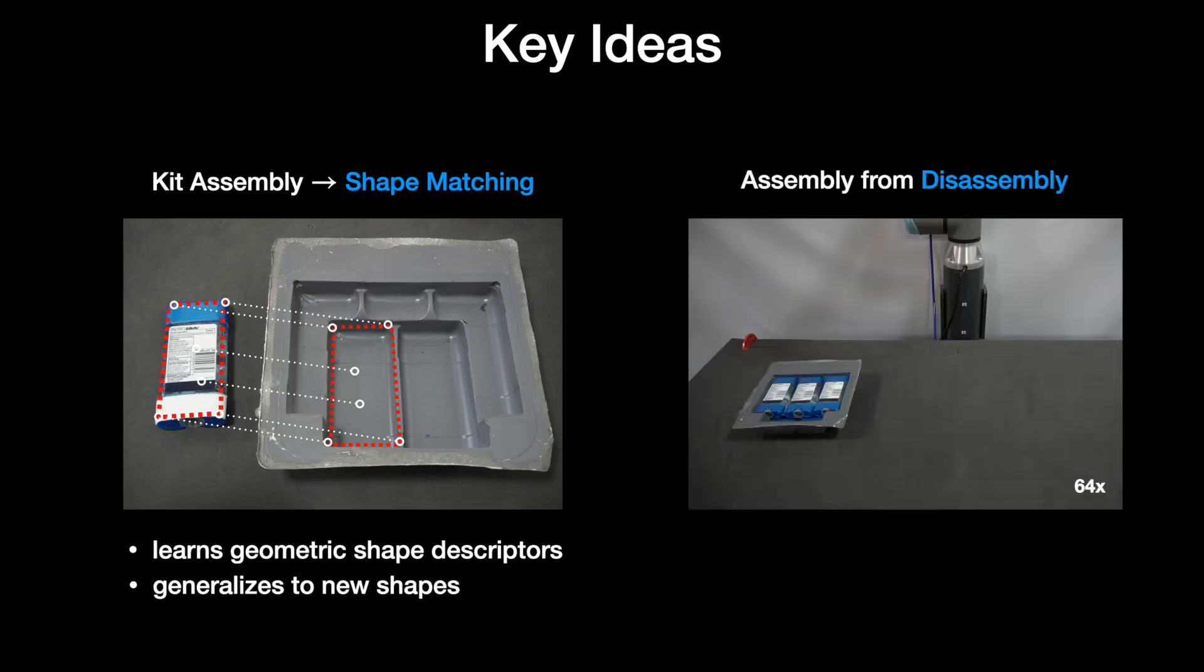Second, Form2Fit acquires this representation entirely through self-supervision. The key idea is that while inserting objects into tight spaces with the correct orientation is challenging to learn through trial and error, because the chances of success from random exploration can be slim,